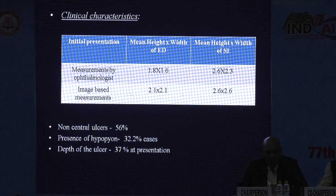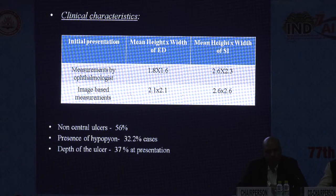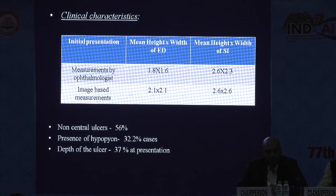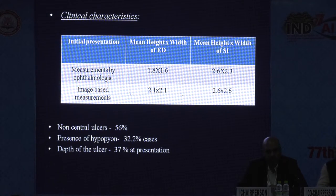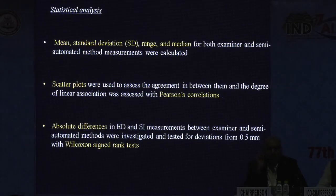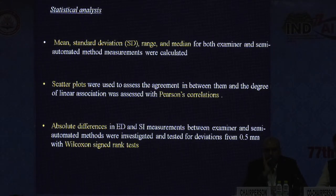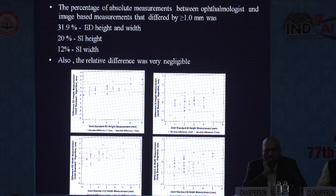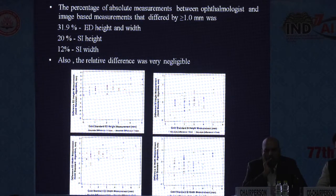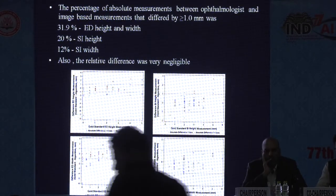At initial presentation, the dimensions of the epithelial defect as measured by the ophthalmologist were on average lesser than the corresponding image-based measurements. Non-central ulcers contributed to 56%. Hypopyon was seen in only a third. Depth of the ulcer was 37% at presentation. Mean, standard deviation, range, and median for both examiner and image-based measurements were calculated, and scatter plots were used to assess agreement between them. Absolute differences were noted and tested for deviations by Wilcoxon's signed rank test.